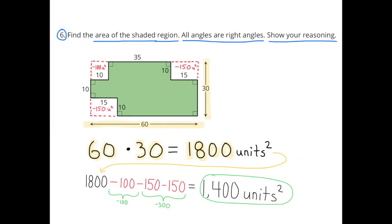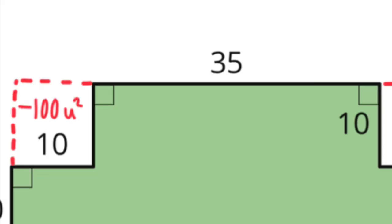Number 6: Find the area of the shaded region. All angles are right angles. Show your reasoning. I'm going to multiply the length times the width. So 60 times 30 equals 1,800 units squared.